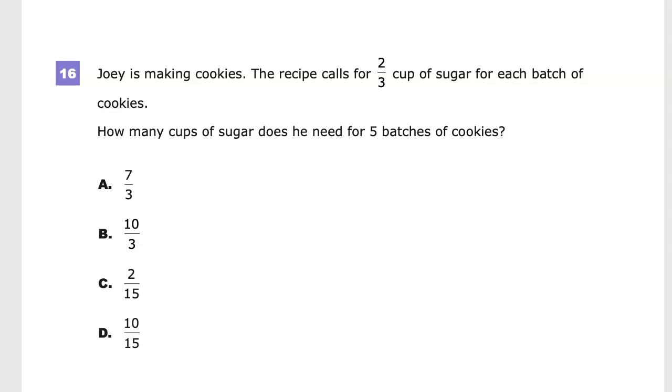This is the grade four math practice test for TN Ready. On this version of the test, it's question number 16. Joey is making cookies. The recipe calls for two-thirds of a cup of sugar for each batch of cookies. How many cups of sugar does he need for five batches of cookies?